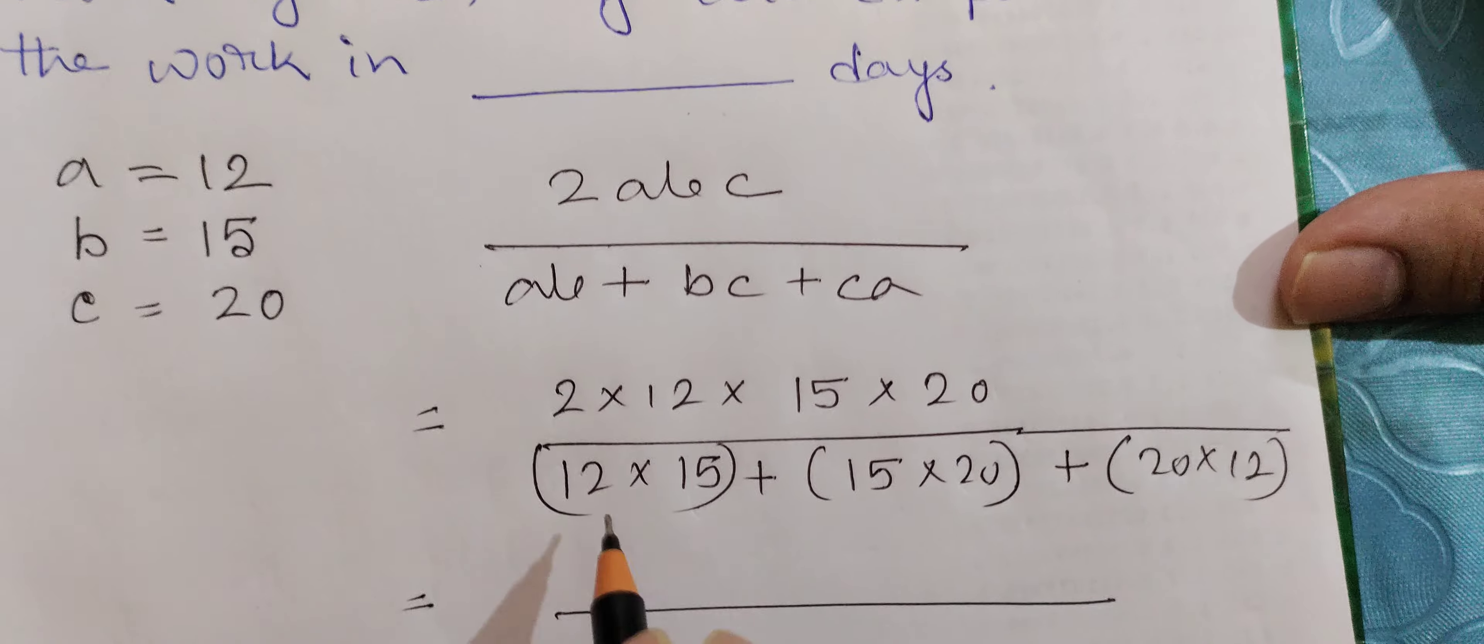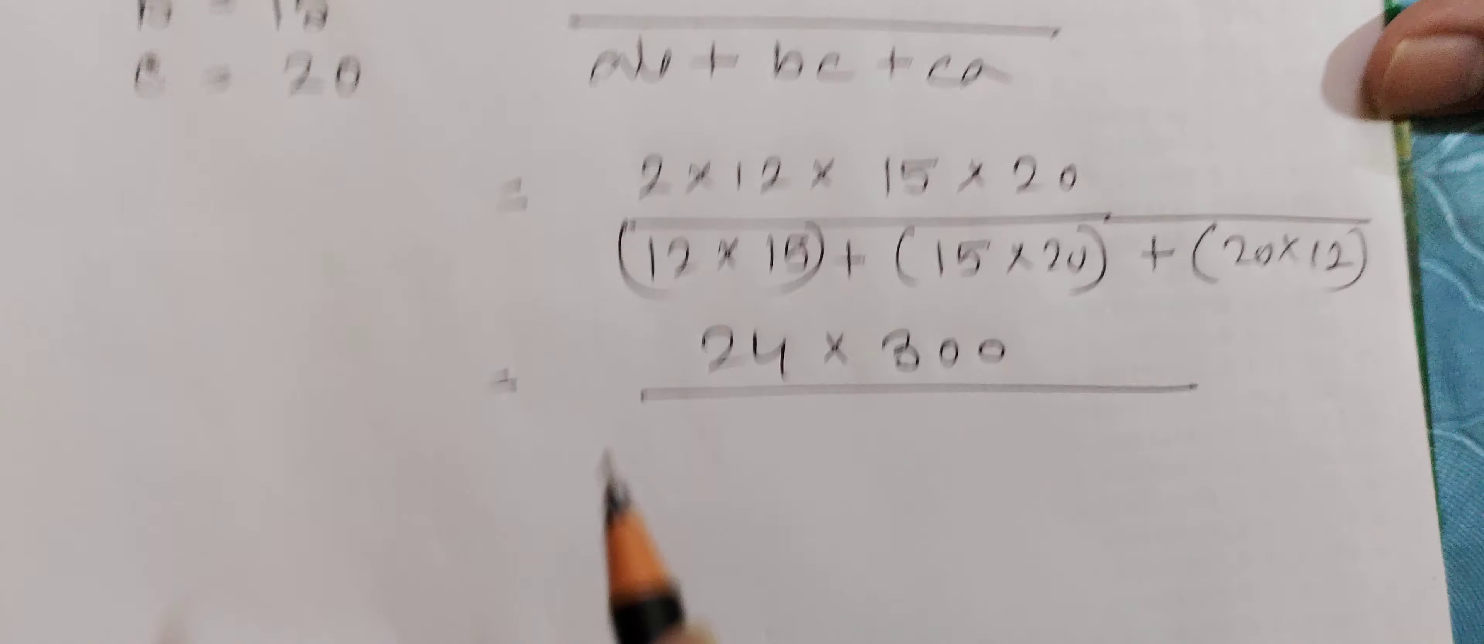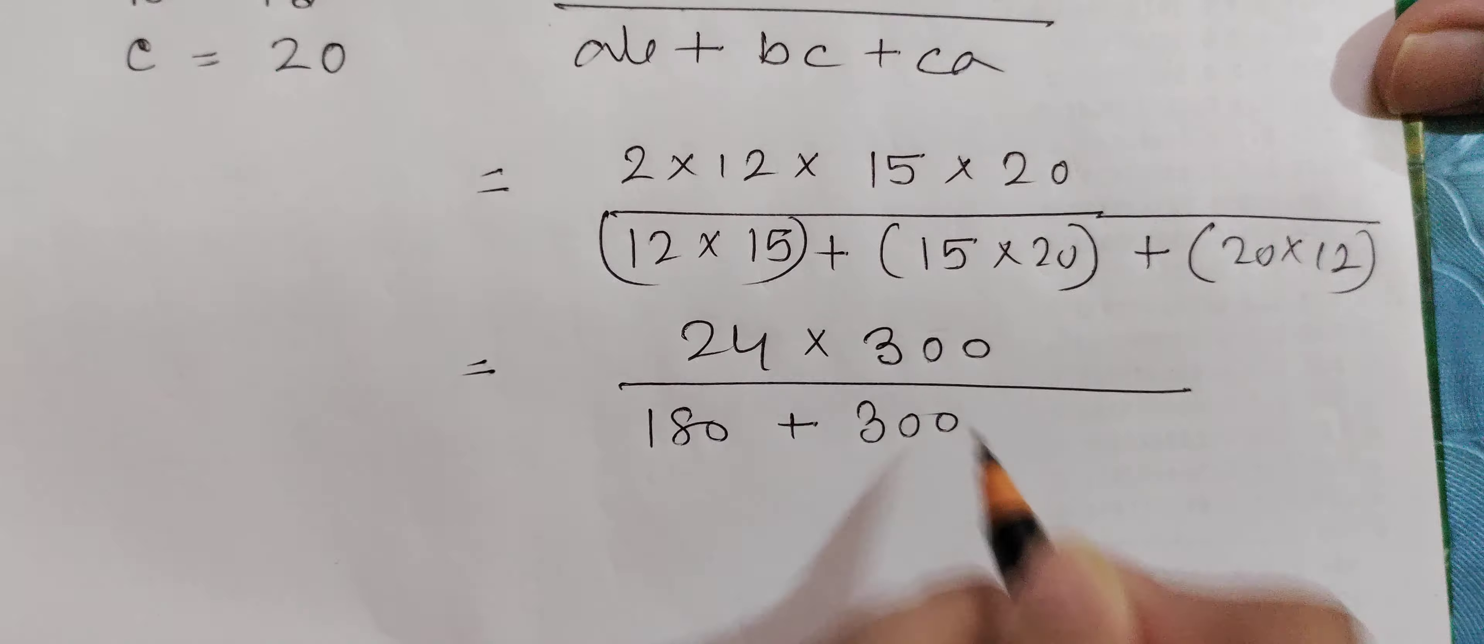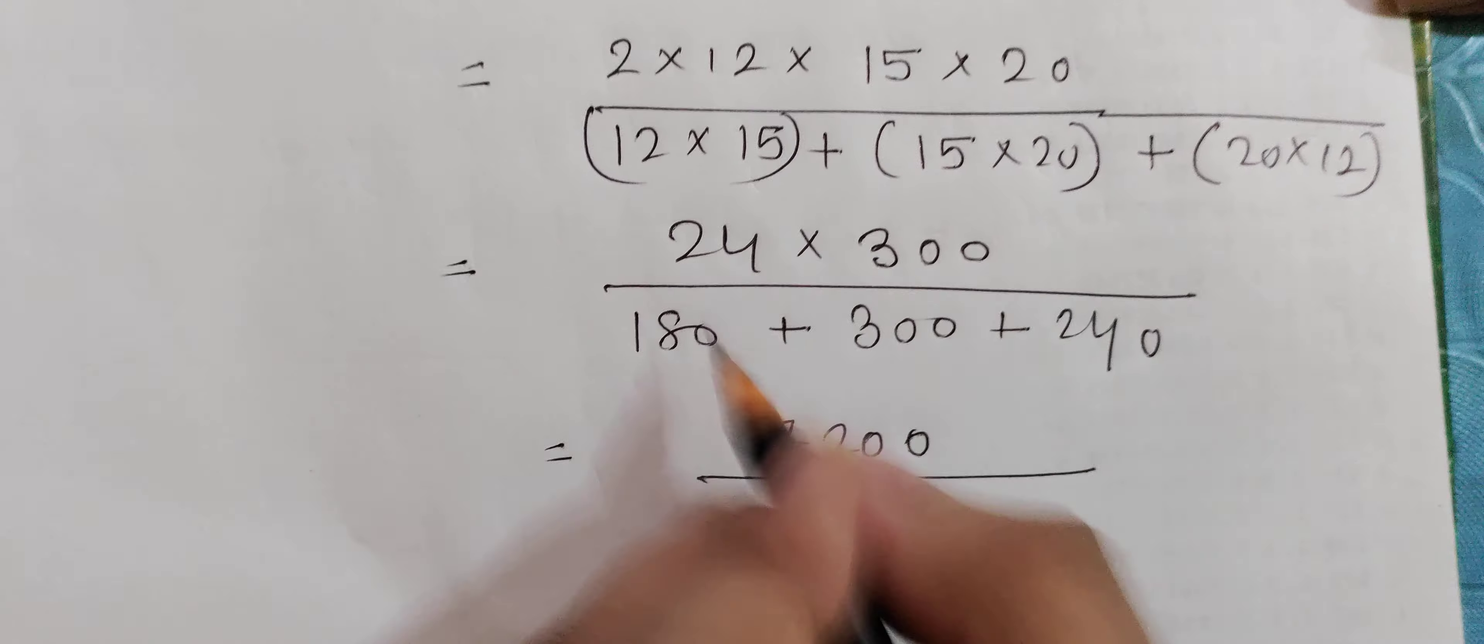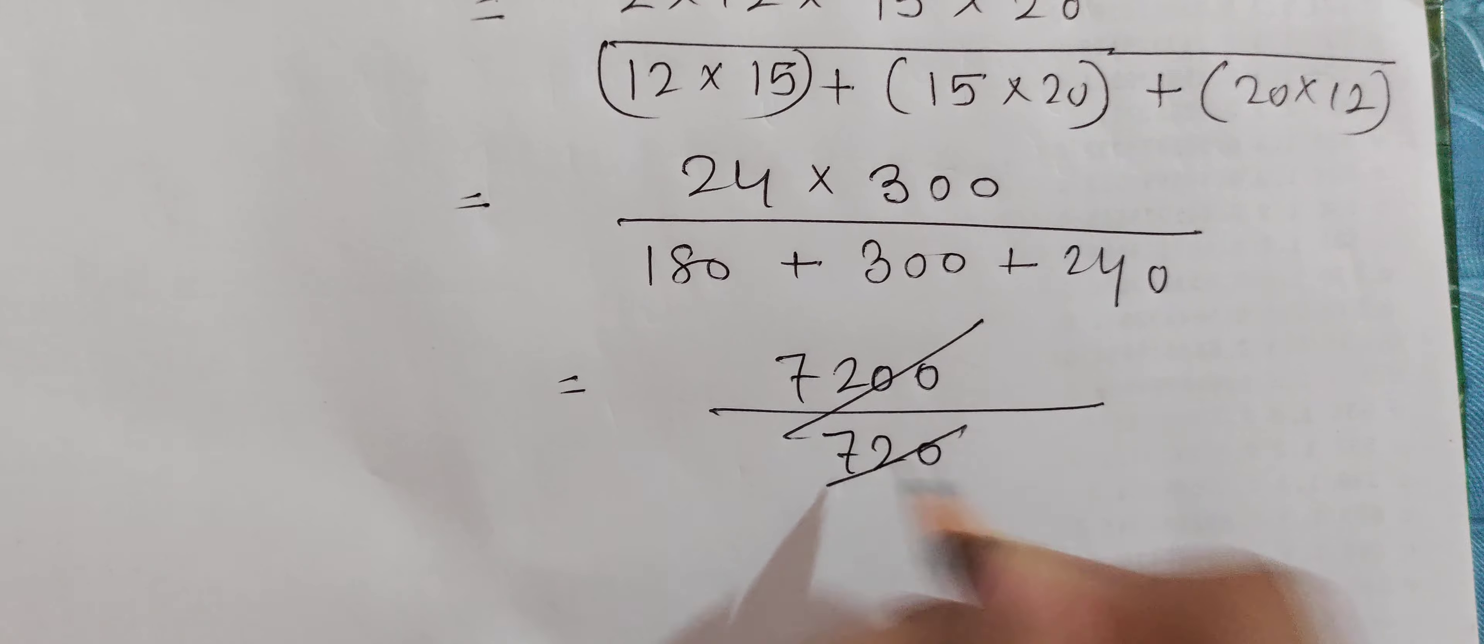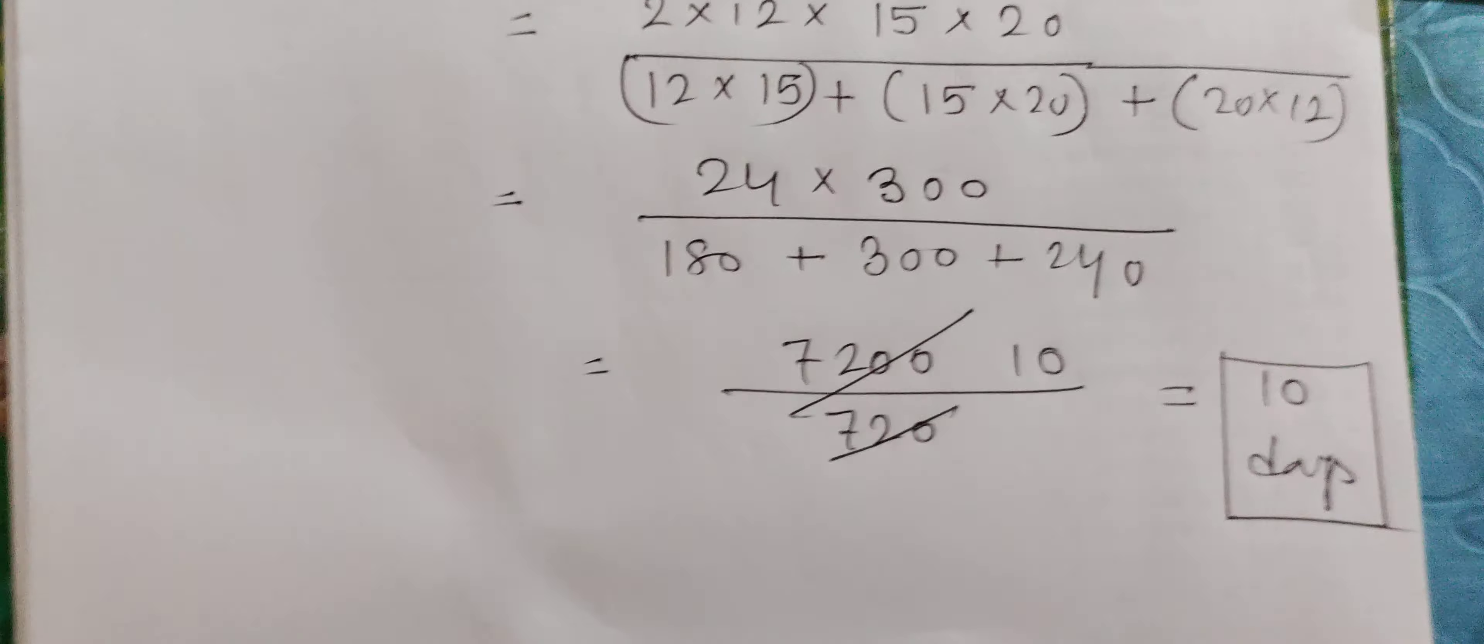Now simplifying: 24 times 300. Multiplying these, we get 180, 300, 240 in the denominator. So the numerator is 7200 and the denominator when summed is 720. So the final answer is 10 days. If all three work together, the number of days will be 10. Moving on to our next problem.